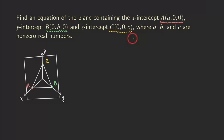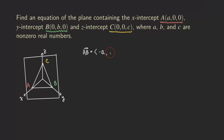We can form one vector using AB. We use the coordinates of B subtracting the coordinates of A to form the vector AB. So we take zero minus a, giving us negative a; then b minus zero, giving us b; and zero minus zero, which is zero. So vector AB = (-a, b, 0).